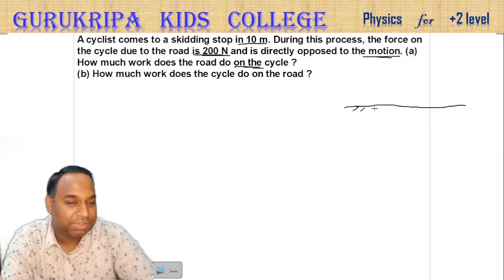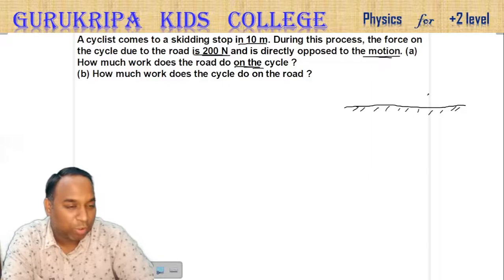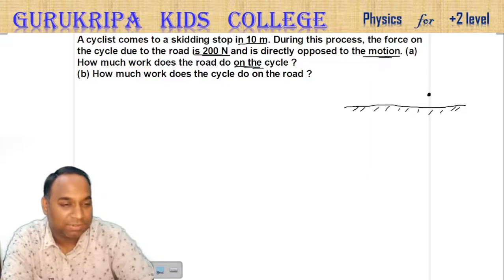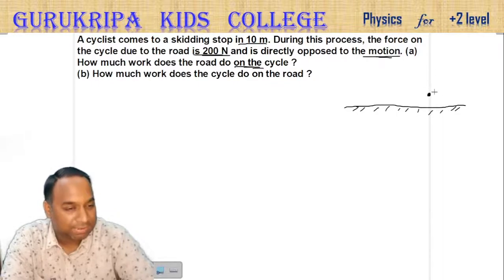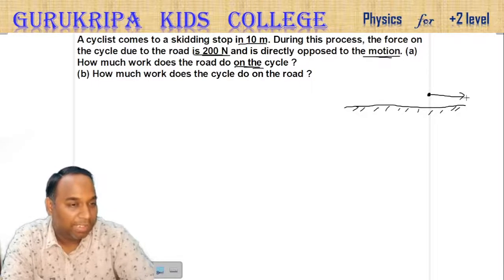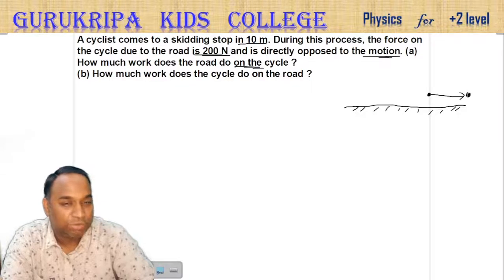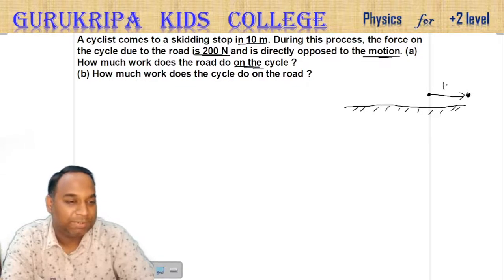This is the road and cyclist as an object. This is the cyclist. Let's say the cyclist is going in this direction, and this distance is 10 meters.